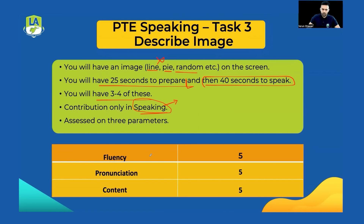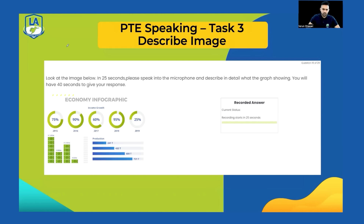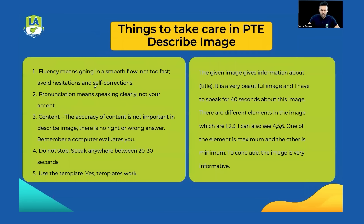This task is assessed on three parameters: you get five points for fluency, five for pronunciation, and five for content. This is how your screen is going to look. As soon as you get the image, you have 25 seconds to prepare, and after that you'll have 40 seconds to give your response.